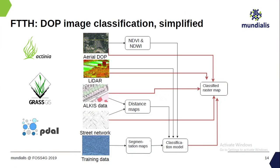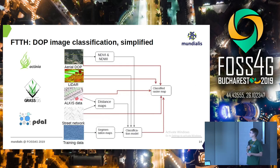Putting this into a flowchart, Actinia is the cloud layer put around GRASS in order to be able to process data in a parallelized way. All the input data comes in with some rules — it's a bit more complex than shown here — and eventually we get the surface map out of that.